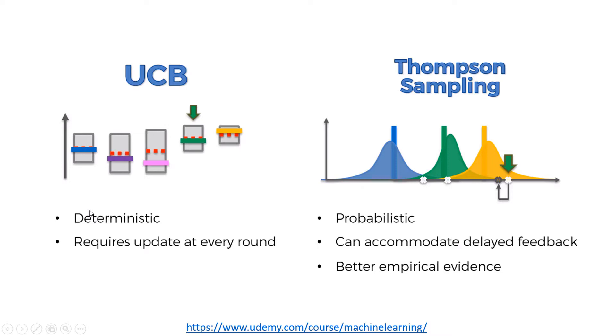This causes consequences. A consequence of being deterministic is that it requires updates at every round. In a real-world scenario, you would have, let's say, 10,000 clicks per hour in an ad. If you want to update your algorithm each time a user clicks an ad, that's going to be very expensive computationally. Therefore, it's not really possible to update at each click.